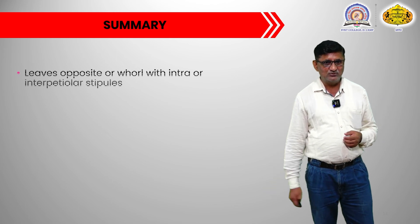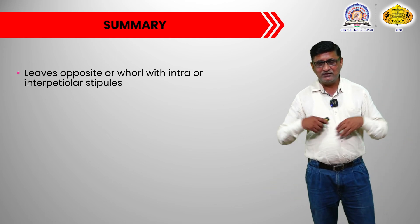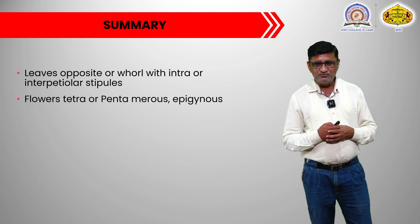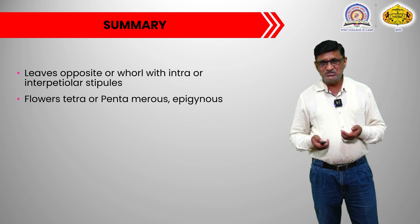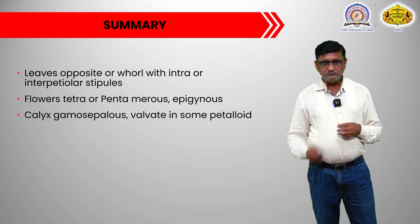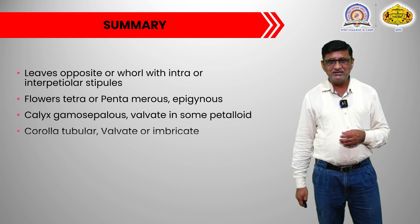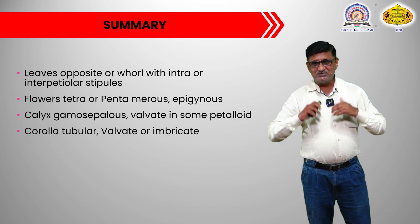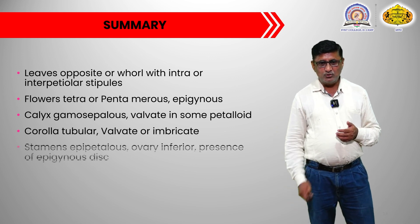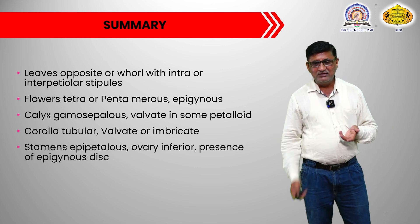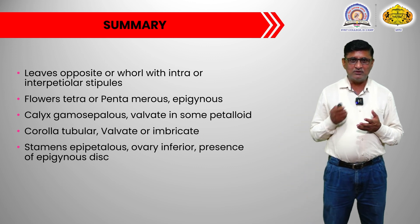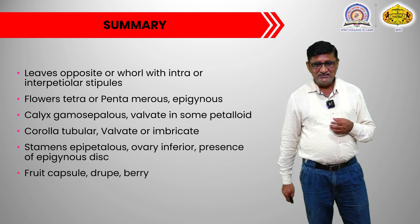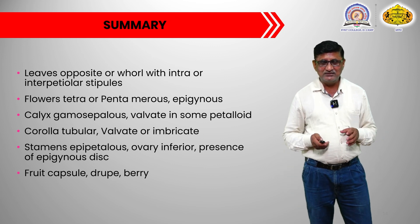Now we will go for the summary of the family Rubiaceae. The leaves are simple, may be found in a whorl, and possess intra- or interpetiolar stipules. The flowers are tetra- or pentamerous and epigynous because the gynoecium is inferior. The calyx is gamosepalous, valvate, and in some plants petaloid in nature. Corolla is tubular, valvate, twisted, or sometimes imbricate. The stamens are equal to the number of corolla lobes and are epipetalous. Gynoecium is inferior with presence of epigyny. Ovules are on axile placentation. The placenta is T-shaped. The fruits are of capsule, drupe, or berry type.